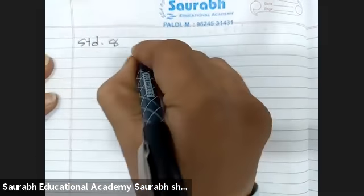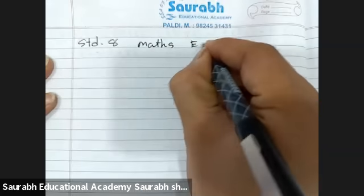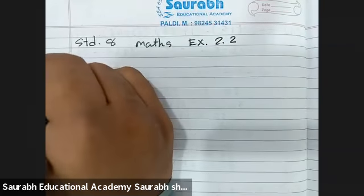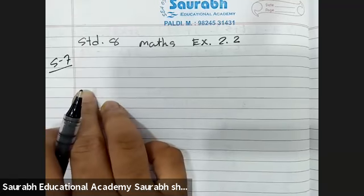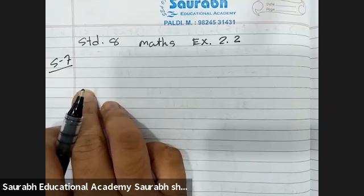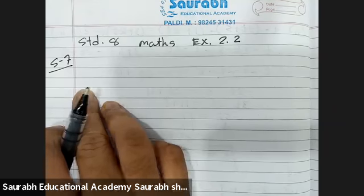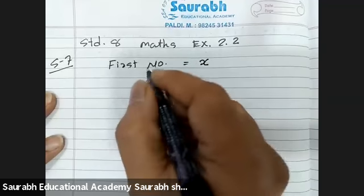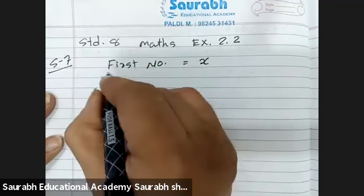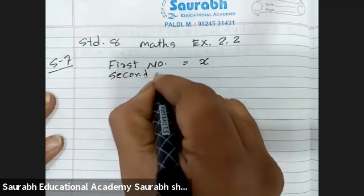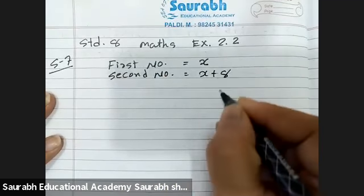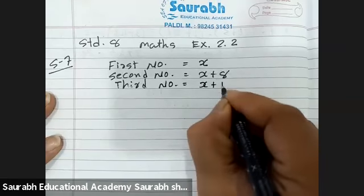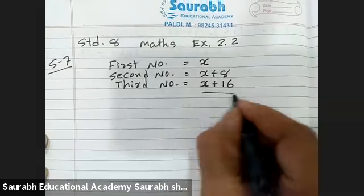Standard 8 Math Exercise 2.2, sum number 7. The question is: the sum of three consecutive multiples of 8 is 888. Let's assume the first number is x. Since they are multiples of 8, the second number is x plus 8, and the third number is x plus 16.